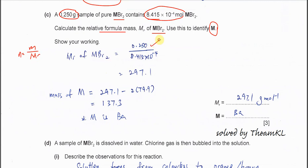So the mass over the mole, you get 297.1. 297.1 is the mass of MBr2, the salt.